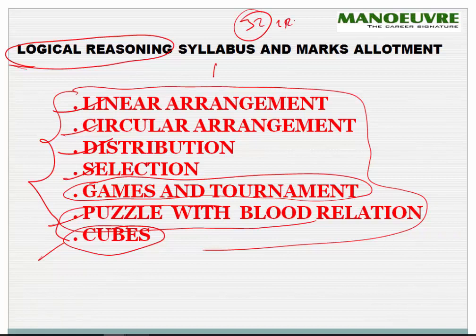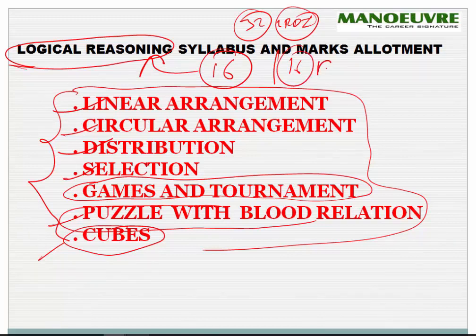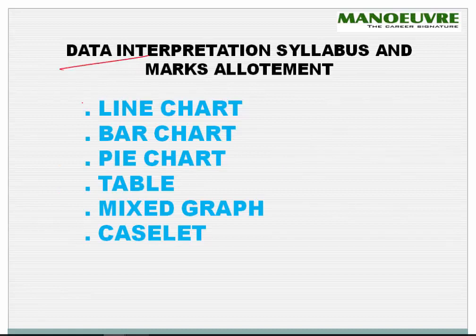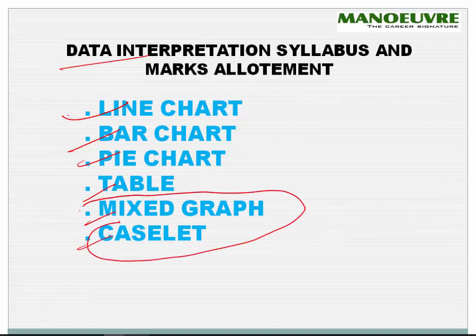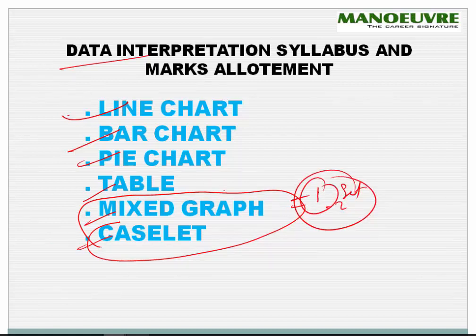So out of 32 questions overall in the LRDI section, 16 questions come from Logical Reasoning and 16 questions come from Data Interpretation. The DI area especially covers line chart, bar chart, pie chart, table, mix graph, and caselet. From caselet and mix graph you can get at least one to two sets. From pie chart and bar chart you will get one set, and one set may be of the table or line chart.